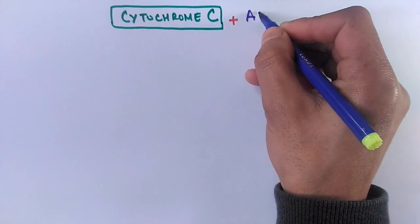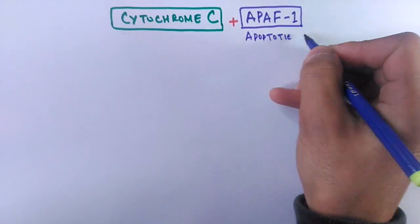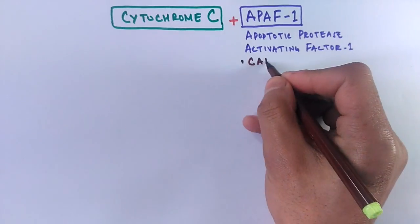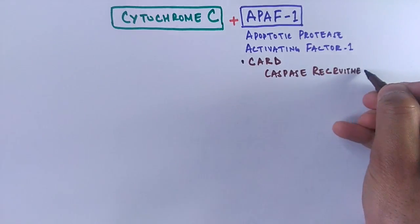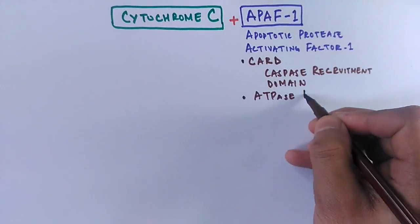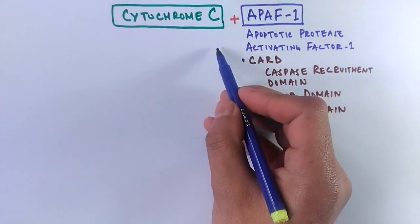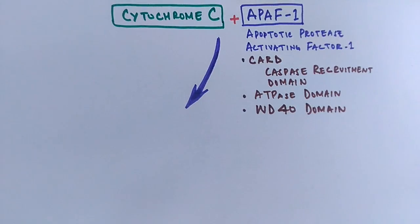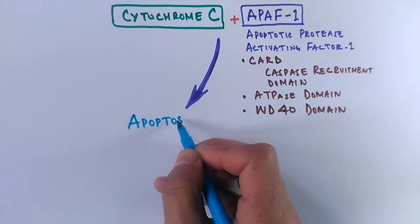This cytochrome c interacts with APAF, that's apoptotic protease activating factor one. It has got three domains: caspase recruitment domain, ATPase domain, and WD40 domain. And this cytochrome c plus APAF factor, they form the apoptosome.